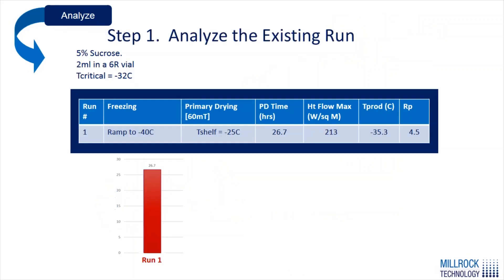The results from this run, drying at minus 25°C, show a primary drying time of 26.7 hours. That doesn't say much in isolation, but we'll see how this compares as we optimize the cycle in the following slides.